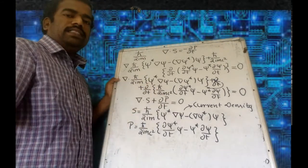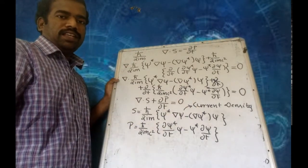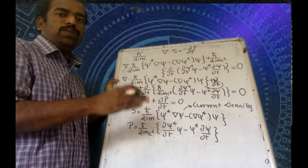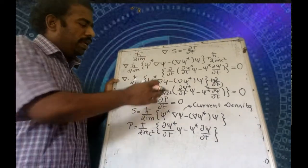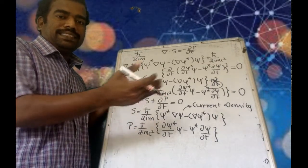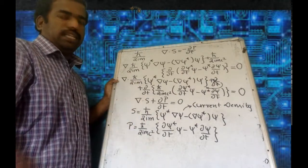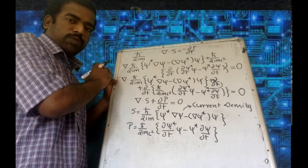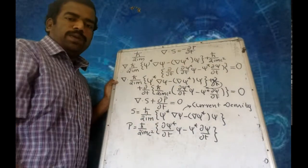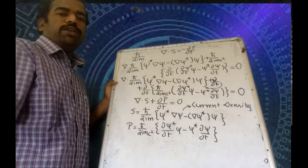Using the concept of the continuity equation: probability density is like a viscous fluid. The probability density flows, and del·S gives the probability current diverging from a point, equal to minus ∂P/∂t. This is the concept of the continuity equation in the Klein-Gordon equation.